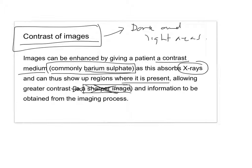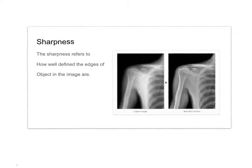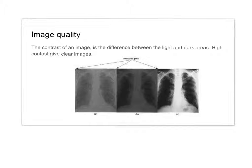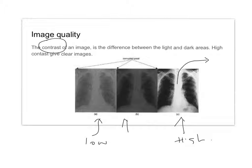That's one way of increasing contrast. Sharpness is a different thing — sharpness refers to how well-defined the edges of the object in the image are. The image quality is about the contrast. This is low contrast and this is very high contrast — it's the difference between the clear and the dark areas. So barium sulfate, if you drink it, will be absorbed by the bones. As the x-rays go through, the bones will absorb more x-rays, increasing the difference between the two areas. High contrast gives nice, clear images.